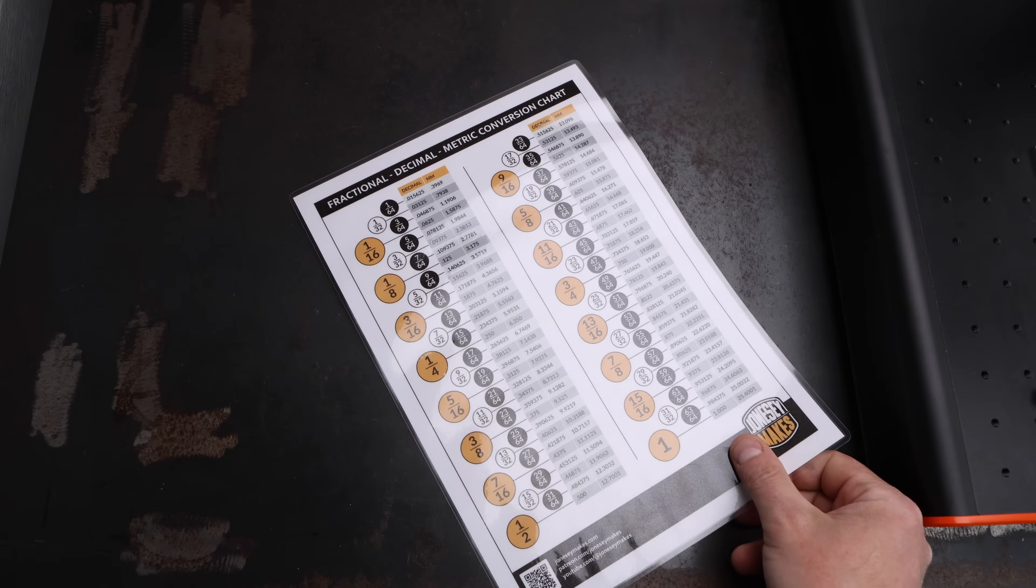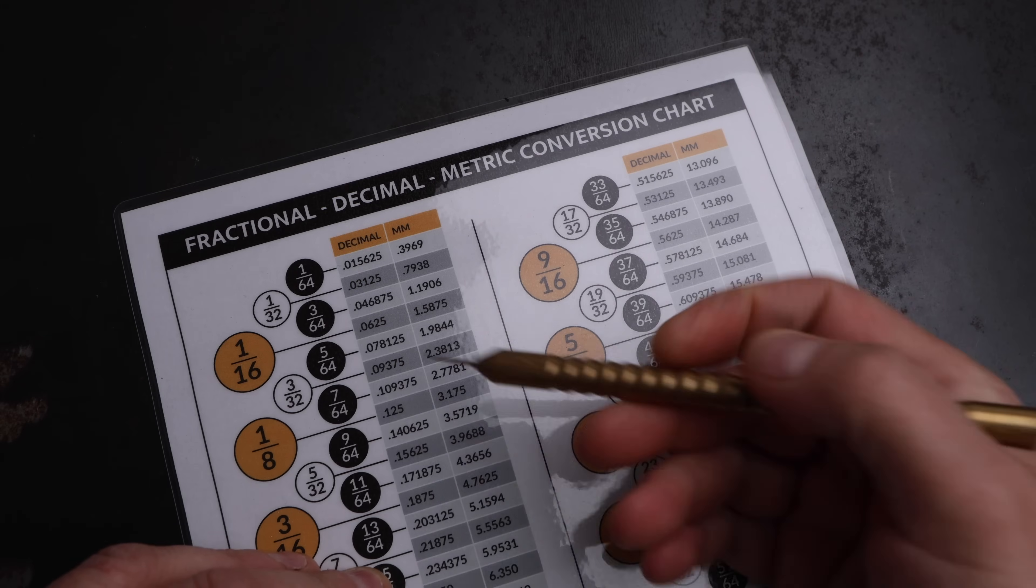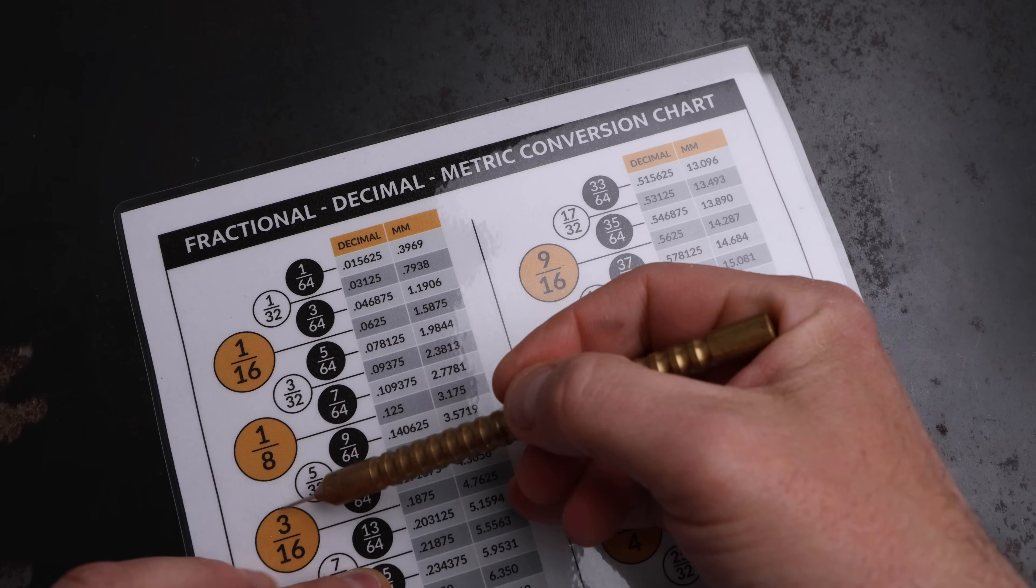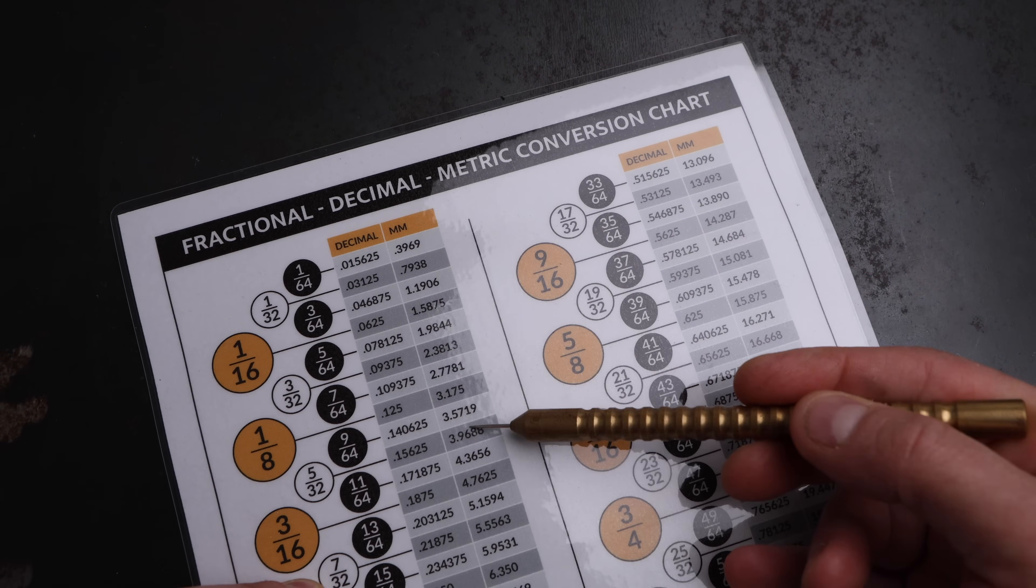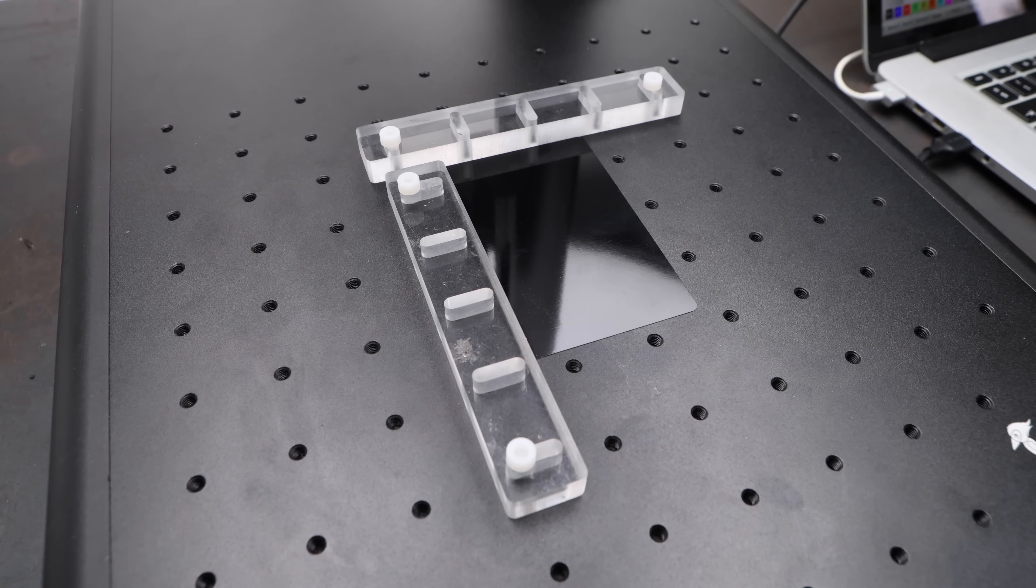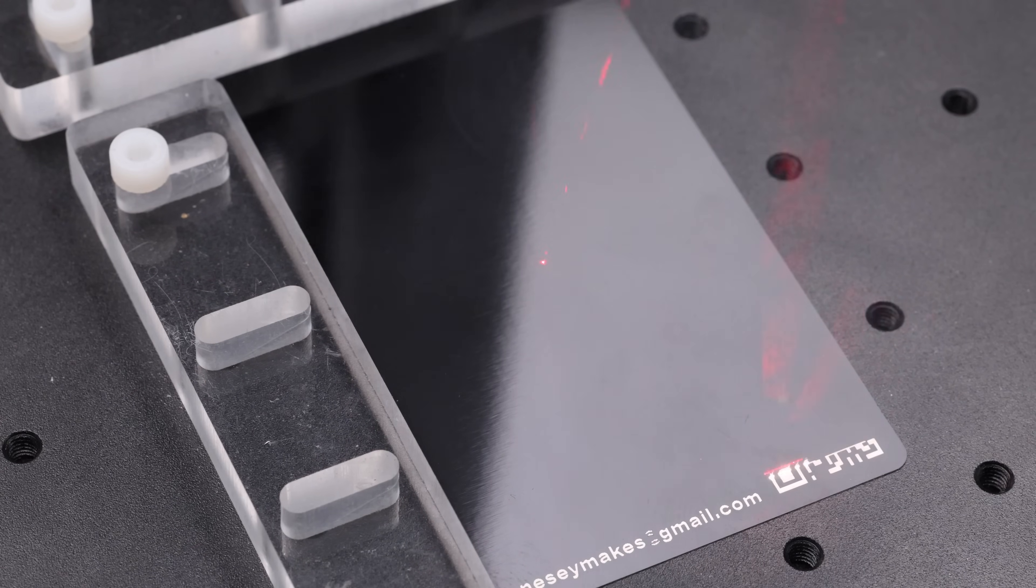And now for something a little different. A while back, I created this conversion chart to give away to my Patreon supporters. We have fractional inches set out in three columns, so that's 16ths, 32nds and 64ths, along with decimal and metric conversions. So I figured it might be a fun exercise to miniaturize this and then burn it with a laser onto a metal business card.